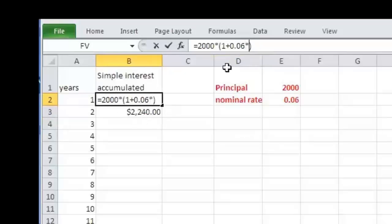But if you notice the two cells, one is the principal times 1.06 times year one, and the next one is exactly the same values, except the one has changed to the two. So in Excel, it has a feature that allows you to let Excel copy a formula in a way that you specify.